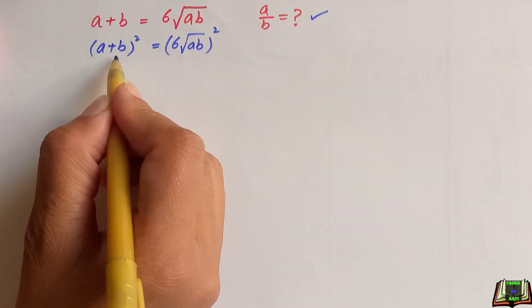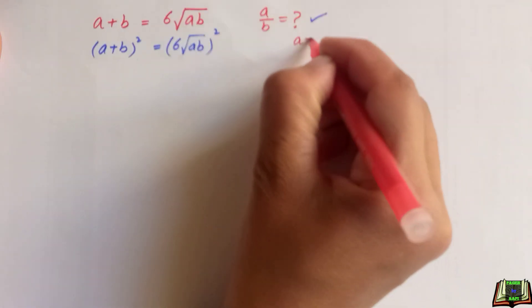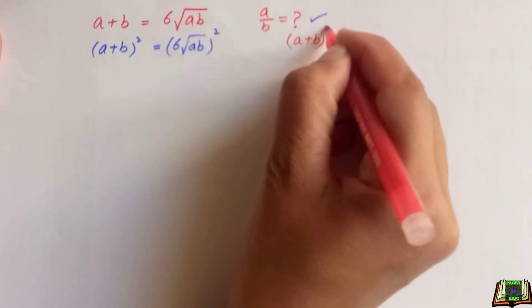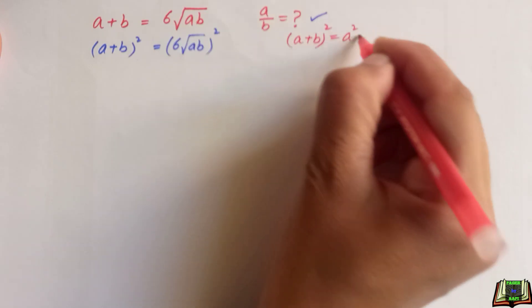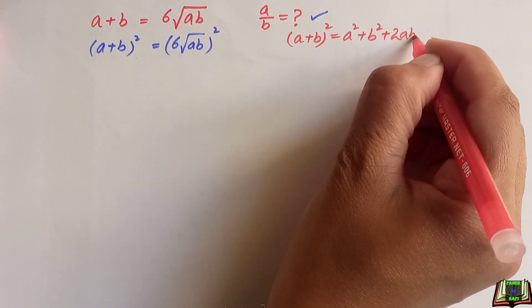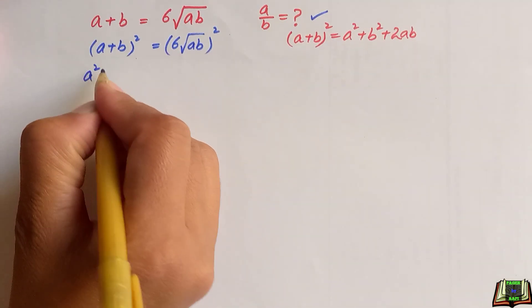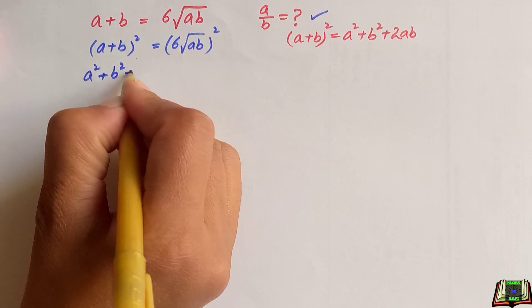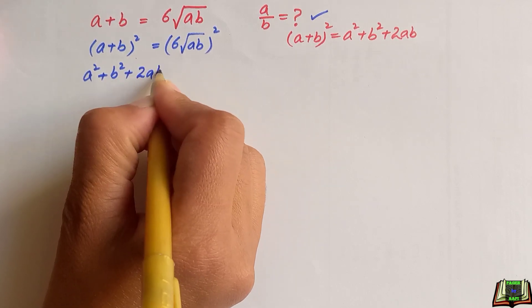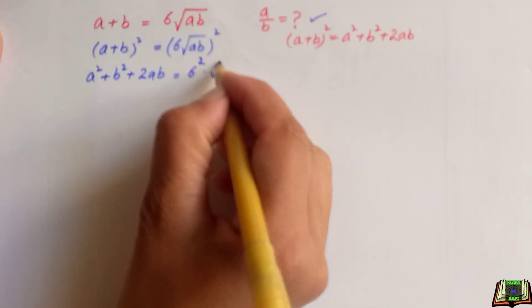Now it becomes an identity a plus b whole square which is equal to a square plus b square plus 2ab. We are going to write a plus b whole square as a square plus b square plus 2ab and on right hand side, we will write them separately 6 square times root ab square.